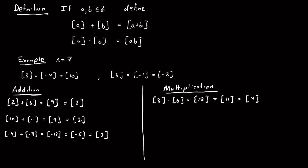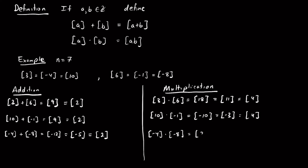Let's check with other representatives. Using 10 and −1: [10] · [−1] = [−10]. Adding 7s: −10 + 7 = −3, −3 + 7 = 4. We get [4] again. Using −4 and −8: (−4)(−8) = 32. Subtracting 7 repeatedly: 32 → 25 → 18 → 11 → 4. We end up with [4] in all cases, confirming multiplication also appears to be well-defined.